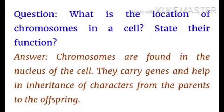What is the location of chromosomes in a cell? State their function. Chromosomes are found in the nucleus of the cell. They carry genes and help in inheritance of characters from parents to offspring. The function of chromosomes: they appear when the cell is ready to divide, and chromosomes play a role in the reproduction of the cell — division of labour means when a cell is ready to divide into two daughter cells.